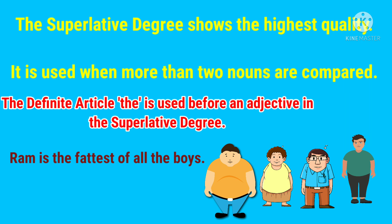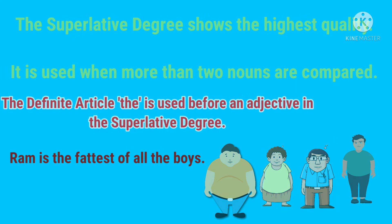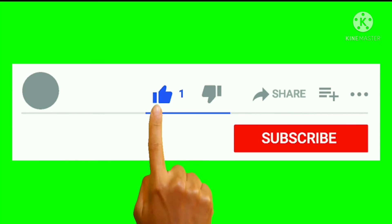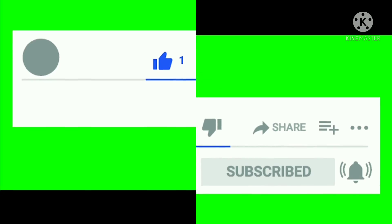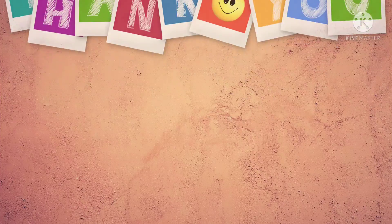So these are the three degrees of comparison of adjectives: the positive degree, the comparative degree, and the superlative degree. I hope you have understood everything. If you have any doubt or question, let me know in the comment section below. We'll continue with the chapter on adjectives in our next video, where we'll discuss rules to form comparative and superlative degrees. Till then, take care, stay healthy, stay safe, and thank you so much for watching.